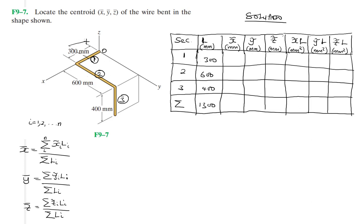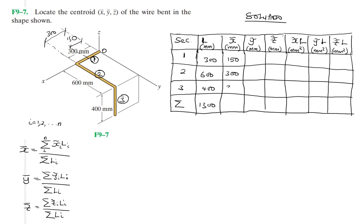The x-centroid for section one is half of 300, which is 150 millimeters. The x-centroid for section two — drawing it out — is 300 millimeters, since it starts at x=300 and runs in the y-direction. The x-centroid for section three is also 300 millimeters.